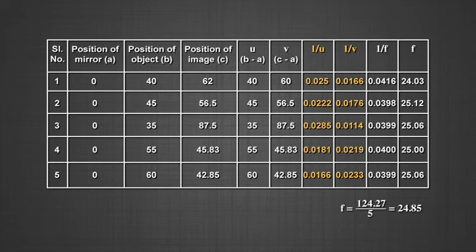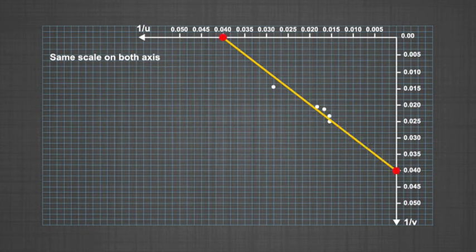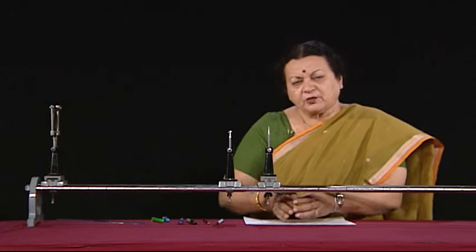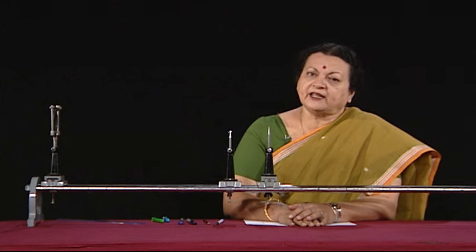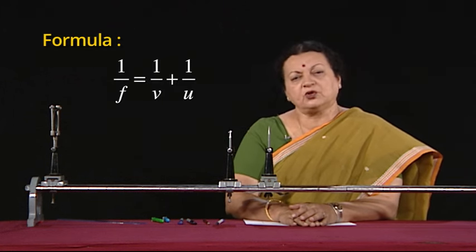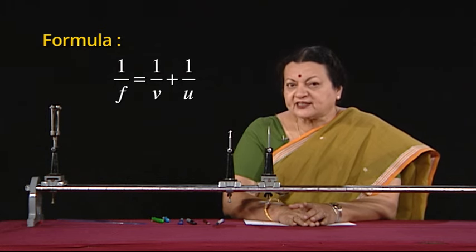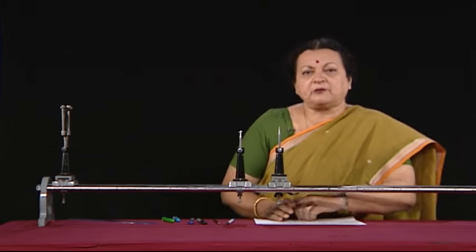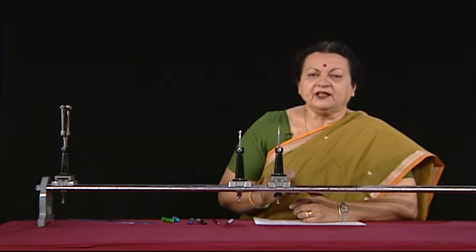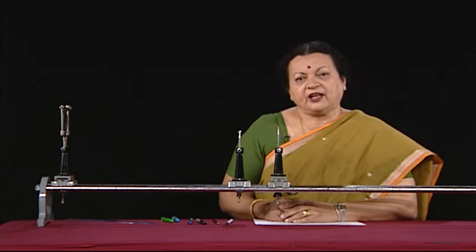You can also plot a graph of 1/v versus 1/u — the intercepts on both axes give the value of 1/f, from which you obtain the focal length. Alternatively, use the mirror formula: 1/f = 1/v + 1/u. Applying the sign convention, this becomes 1/f = 1/(−v) + 1/(−u). Calculate that value to get the focal length.